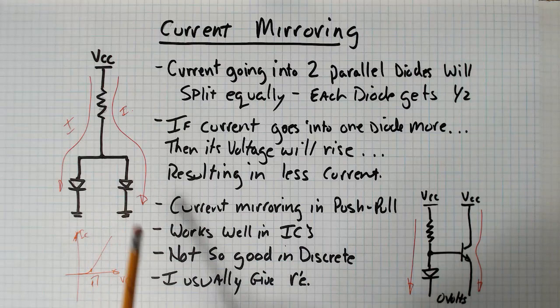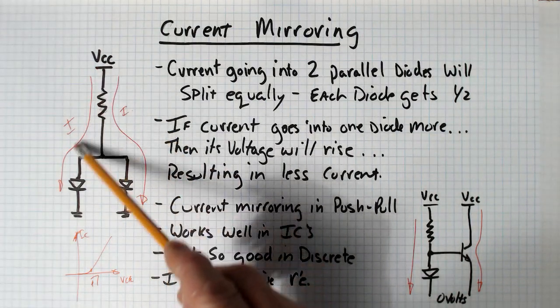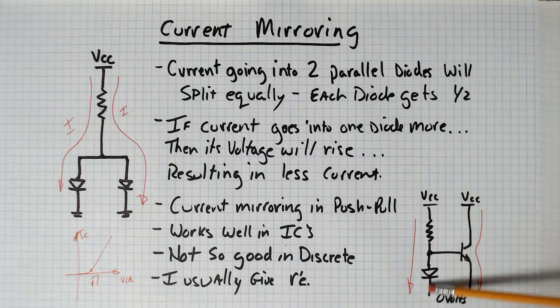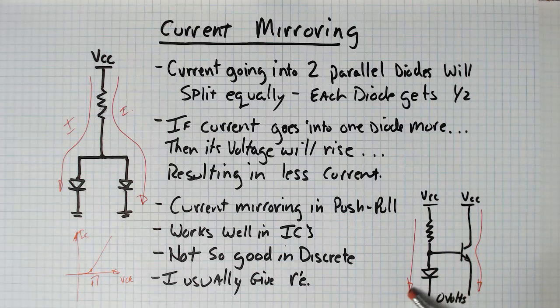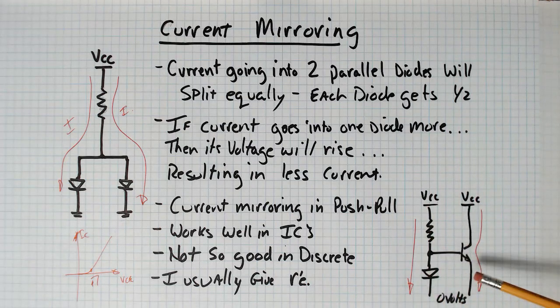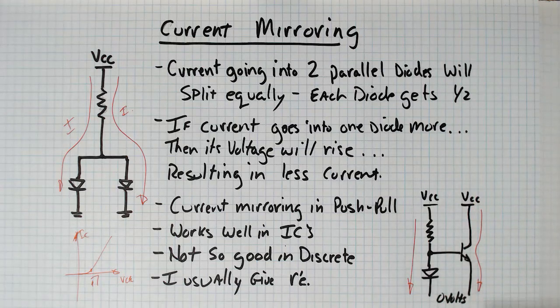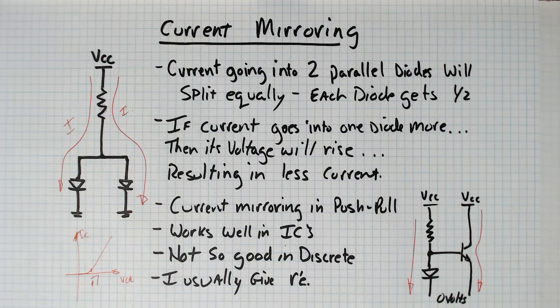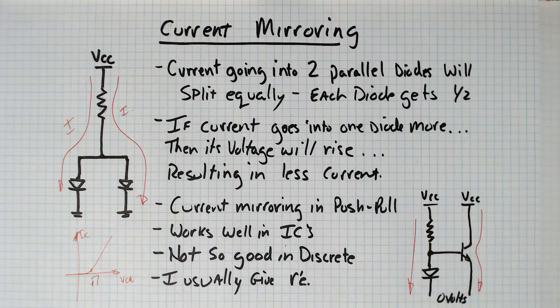And what we're doing when we talk about the push-pull amplifier is we would say this is the bias diode here. We put this diode down here, we got current going down here and then through the transistor. Since I've got these two diodes in parallel, the current down this path would match it. So it doesn't split it, it matches it, because the transistor can amplify the current going through it.